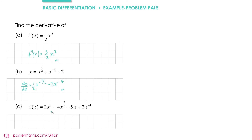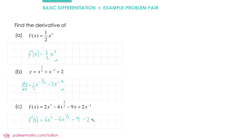In part c we have f(x) equals 2x cubed minus 4x to the 3 over 2 minus 9x plus 2x to the negative 1, and we're finding f'(x). First term: 2 times 3 is 6, giving 6x squared. Second term: 4 times 3 over 2 gives 6, so minus 6x to the one half. Next, differentiating minus 9x: we can think of it as a straight line whose gradient is just minus 9. For the last term, 2x to the negative 1: multiplying by the power gives negative 2, and subtracting 1 from the power gives x to the negative 2.